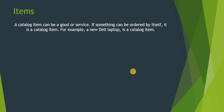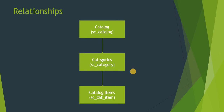Under categories we have items, which are the actual goods or services you want to order. Catalogs and categories are basically used to segregate everything, but items are the actual items you want to order — for example, a Dell laptop or a service. The relationship is: catalog is stored in the sc_catalog table, categories in the sc_category table, and catalog items in the sc_cat_item table.